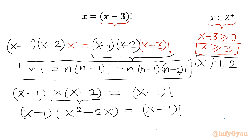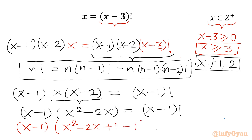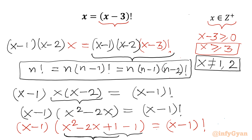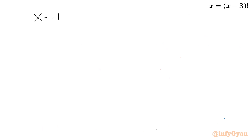Remember x cannot equal 1 or 2. Now I will use one manipulation step: I will write (x-1) times (x² - 2x + 1 - 1), which equals (x-1)!. By adding and subtracting 1, we get a perfect square. This gives us (x-1) times [(x-1)² - 1] equals (x-1)!.